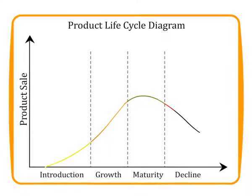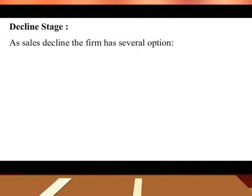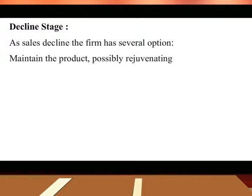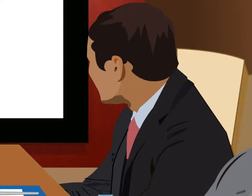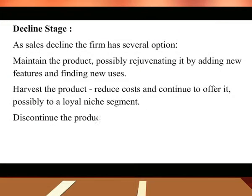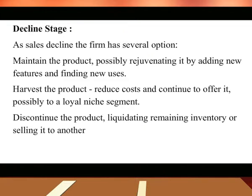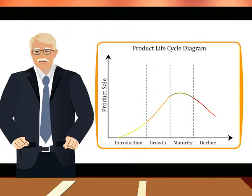Moving on to the last stage, the decline stage. As sales decline, the firm has several options: maintain the product, possibly rejuvenating it by adding new features and finding new uses; harvest the product, reducing costs and continuing to offer it possibly to a loyal niche segment; or discontinue the product, liquidating remaining inventory or selling it to another firm willing to continue the product. The marketing mix decisions in the decline phase will depend on the selected strategies.